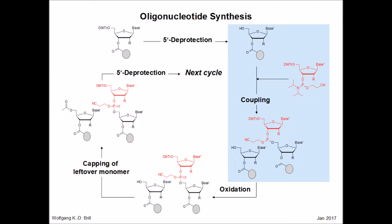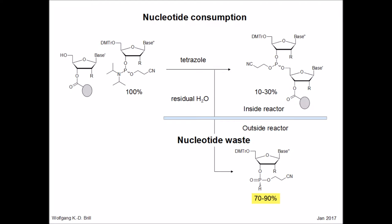This is the coupling reaction. The coupling reaction requires excess of nucleoside phosphoramidites, first to drive the reaction to completion, but also to overcompensate side reactions with residual water present in reagents, solvents, and on the polymeric support. The hydrolysis products of the phosphoramidites — the hydrogen phosphonates, seen on the bottom part of this slide — do not participate further during the coupling reaction. They will be washed off from the polymeric support after the coupling reaction is over.